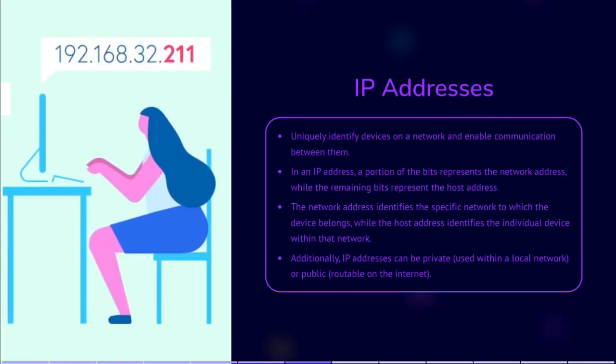IP addresses uniquely identify devices on a network and enable communication between them. They consist of two parts: the network portion and the host portion. In an IP address, a portion of the bits represent the network address, while the remaining bits represent the host address. The network address identifies the specific network to which the device belongs, while the host address identifies the individual device within that network. Additionally, IP addresses can be private, used within a local network, or public, routable on the internet.